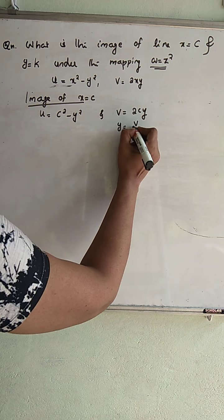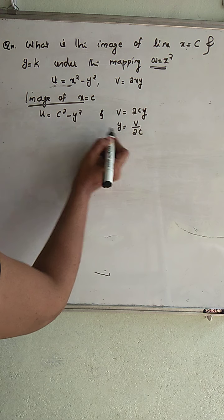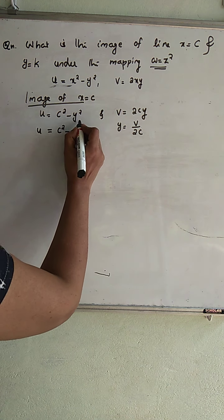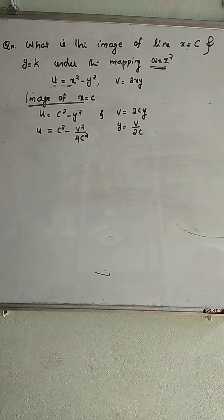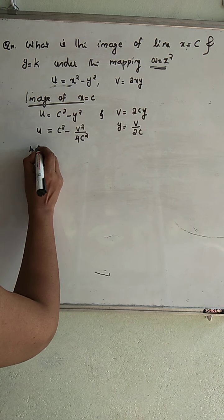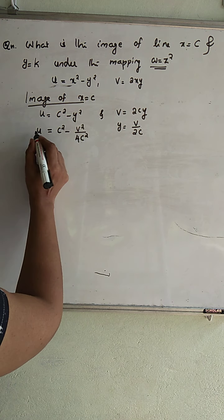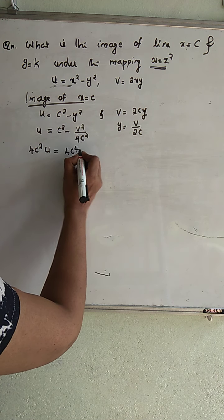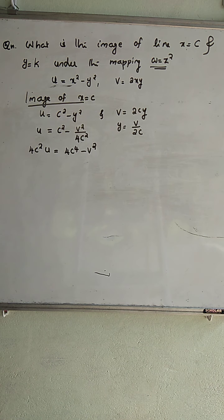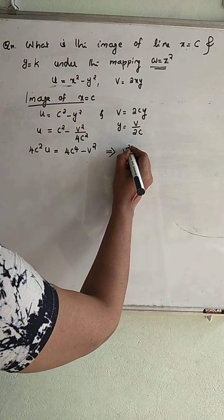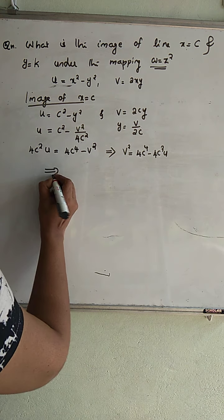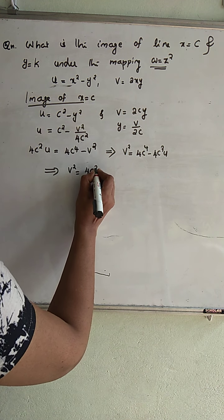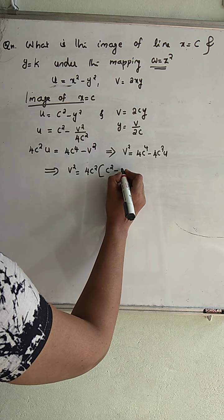From V equal to 2CY, we get Y equal to V divided by 2C. Substituting this into the expression for U, we get U equal to C square minus V square over 4C square. Taking LCM and cross multiplying, we get 4C square times U equal to 4C raised to 4 minus V square.